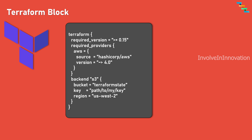This Terraform block has different blocks and attributes. The different blocks include the required_providers block, which specifies all the providers required by the current module, mapping each local provider name to the source address and version constraint. For example, if you are using AWS as a provider, you need to have AWS inside the required_providers.